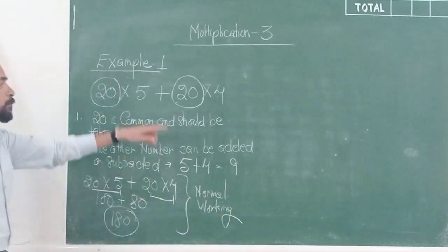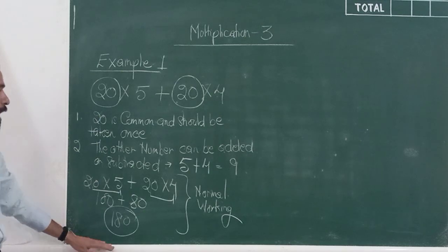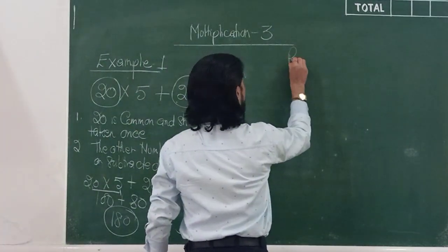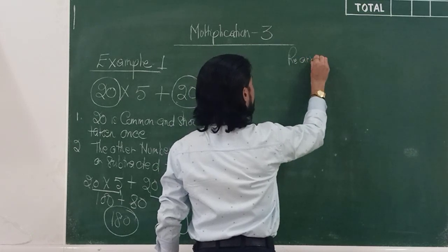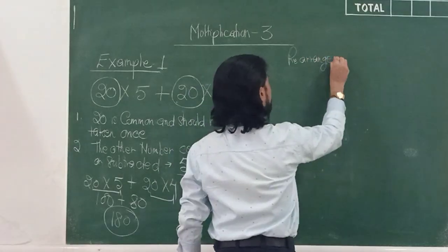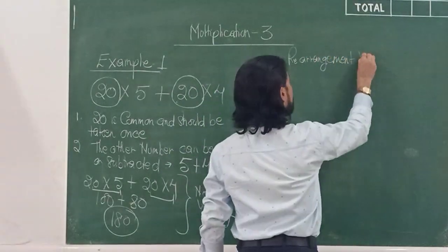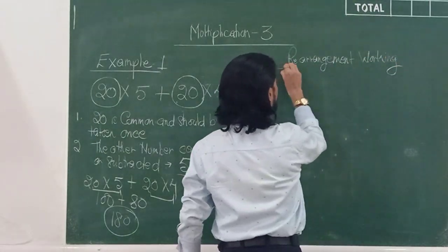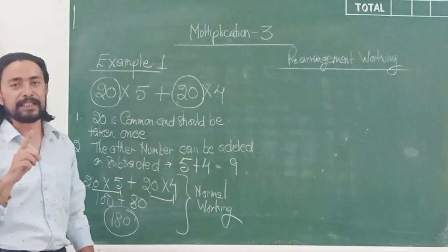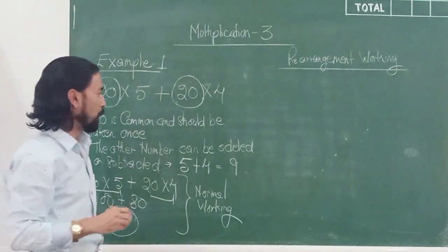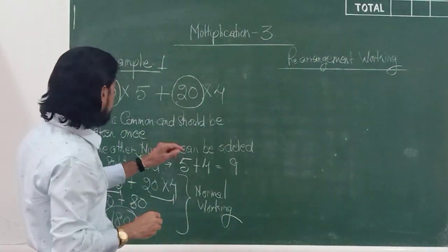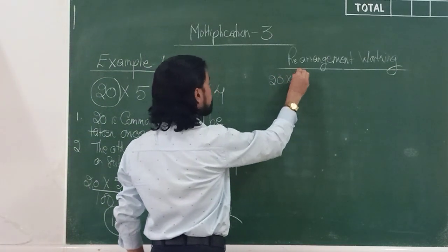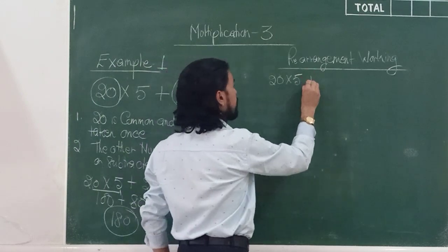Now I will show you the rearrangement working on the other side of the board — how to do it according to rearrangement. This is the step we are going to apply in sum number 5, parts A, B, C, and D. I will take the same sum: 20 into 5 plus 20 into 4.